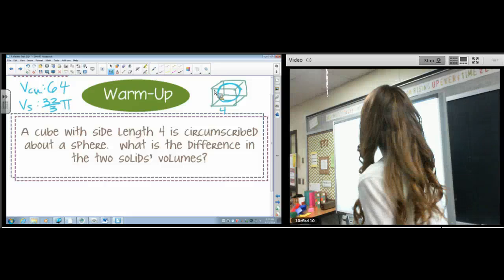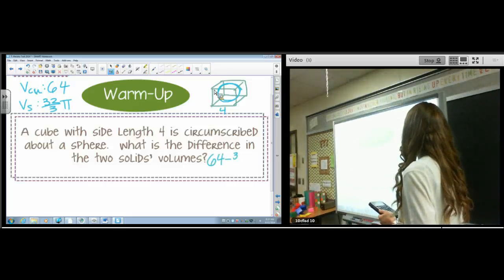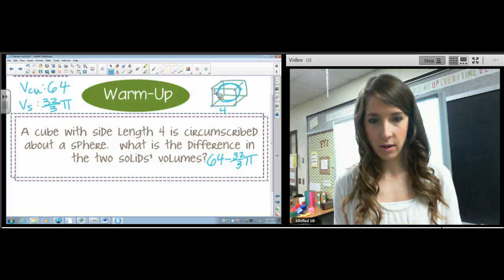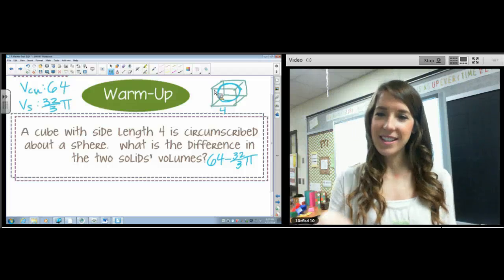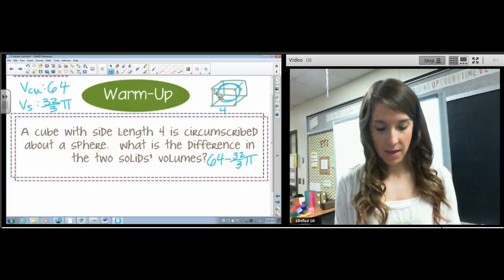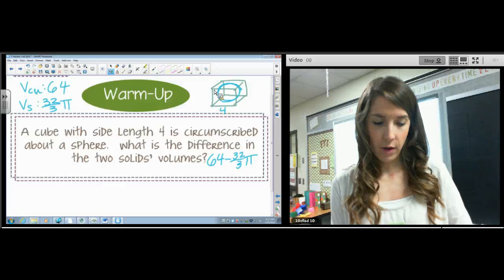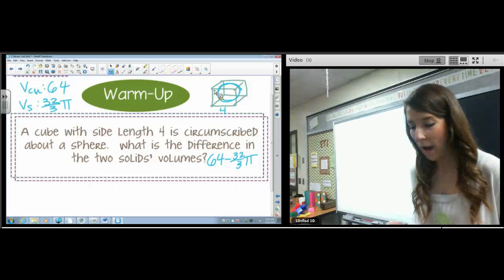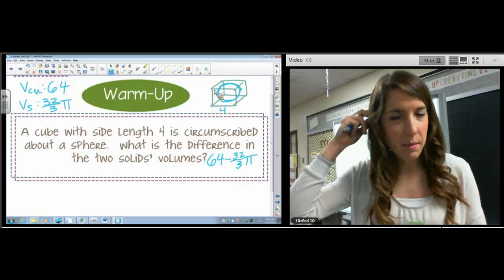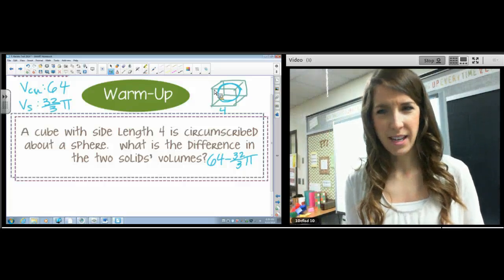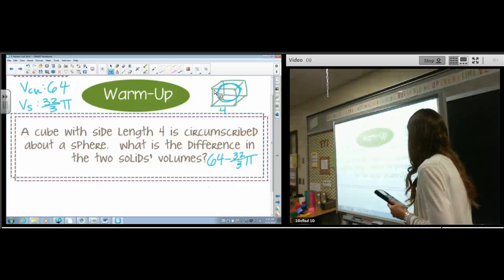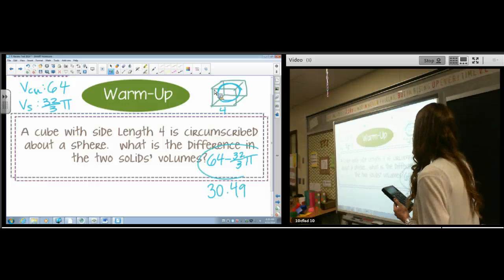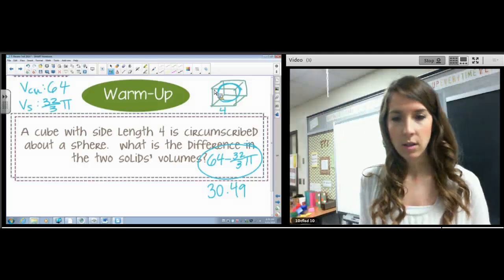64, which one's larger? Hopefully we realize the cube is larger. So the exact answer would be that. And the approximate answer... Oh you're funny Taha, the sphere is inside the cube, it can't be bigger. And the approximate answer, let's go for approximate. 32 thirds times pi, 64 minus. So that's the exact answer.